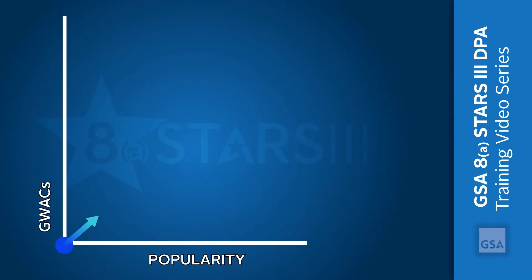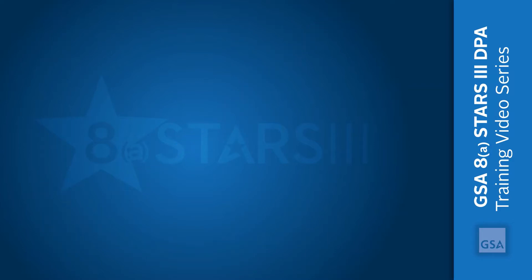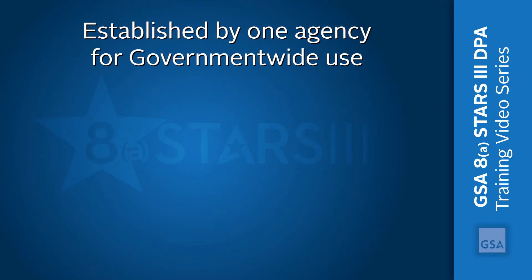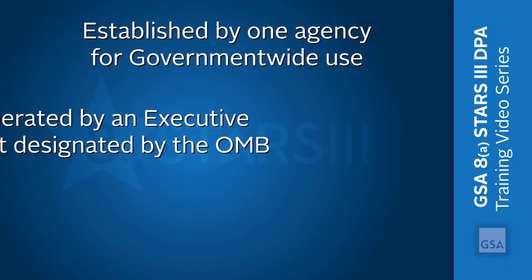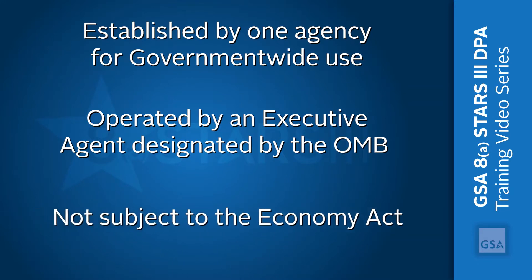GWACs and other multi-agency contracts are growing in popularity as agencies look for ways to be more efficient, reducing their procurement costs and acquisition lead times. GWACs are established by one agency for government-wide use, operated by an executive agent designated by the Office of Management and Budget, and not subject to the Economy Act.